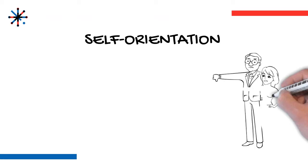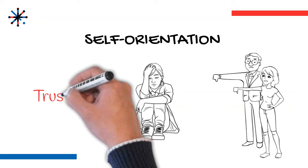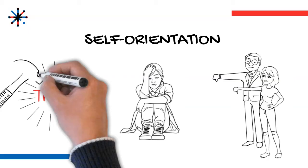Self-orientation is the extent to which others feel we are focused on ourselves rather than on them. And no matter how strong your credibility, reliability, and intimacy are, if you're high on self-orientation, if you're focused on yourself, then building trust is difficult.